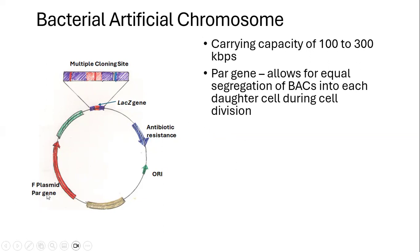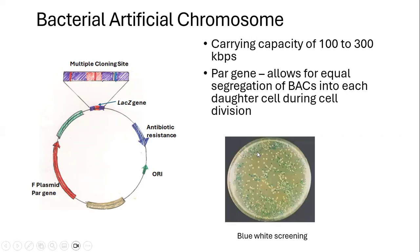Additionally, it shows presence of the F-plasmid par gene. The F-plasmid par gene allows for segregation of the bacterial artificial chromosome into each daughter cell during the cell division cycle. We also have the lacZ gene within the multiple cloning site. The lacZ gene encodes for an enzyme that results in formation of blue colored colonies in the presence of artificial substrate X-gal and inducer IPTG. If we are able to clone into the multiple cloning site, we have a recombinant bacterial artificial chromosome in which case the lacZ gene will be inactive, resulting in formation of white colonies. This helps in screening of inserts and is known as a screenable marker.